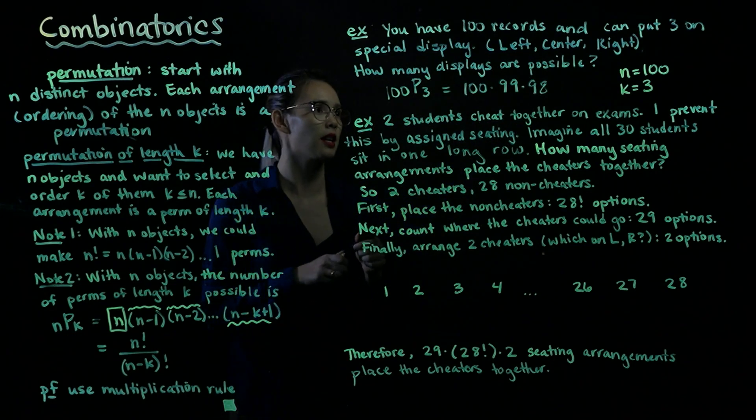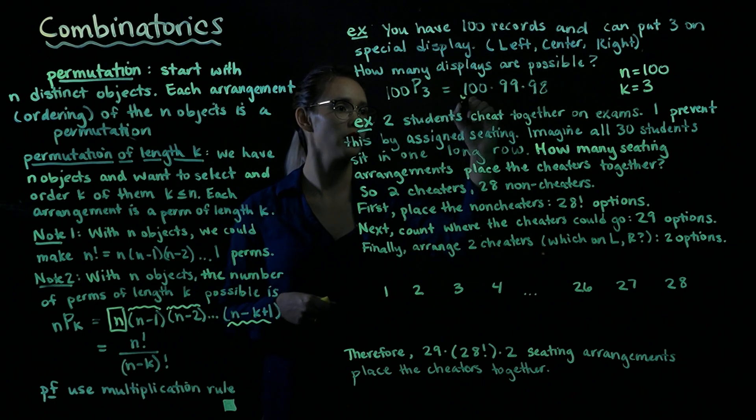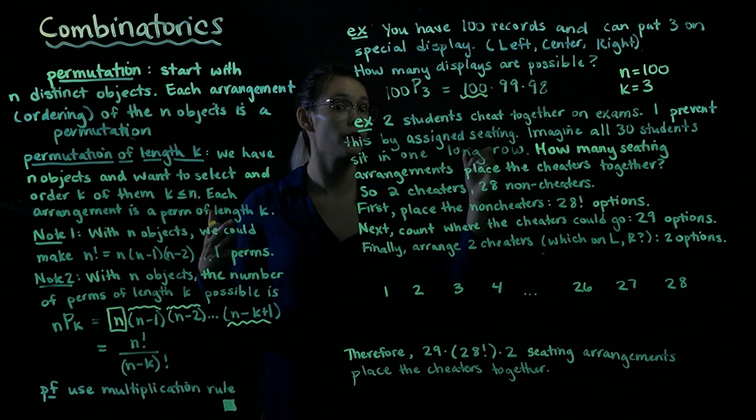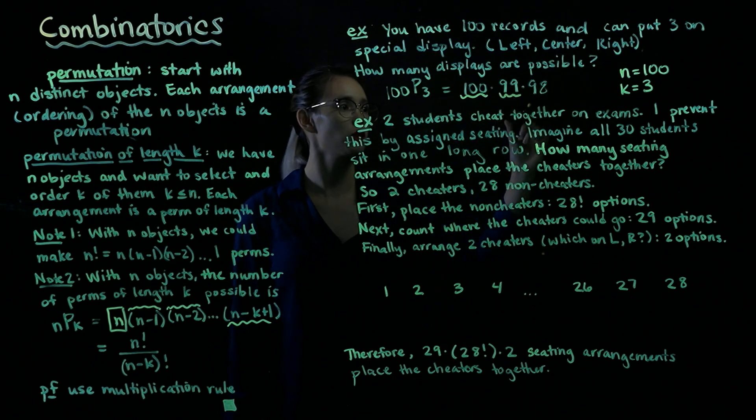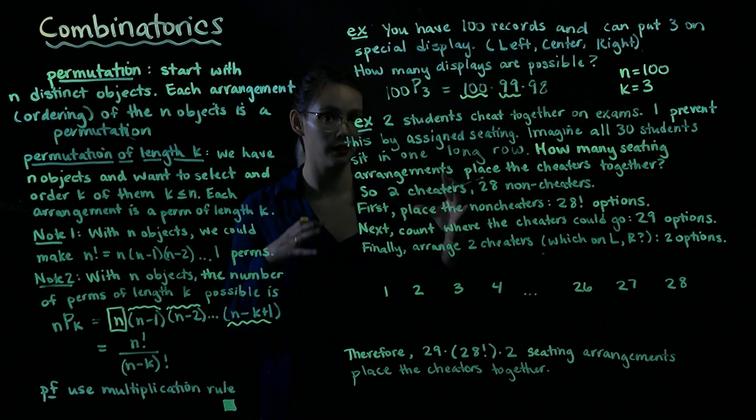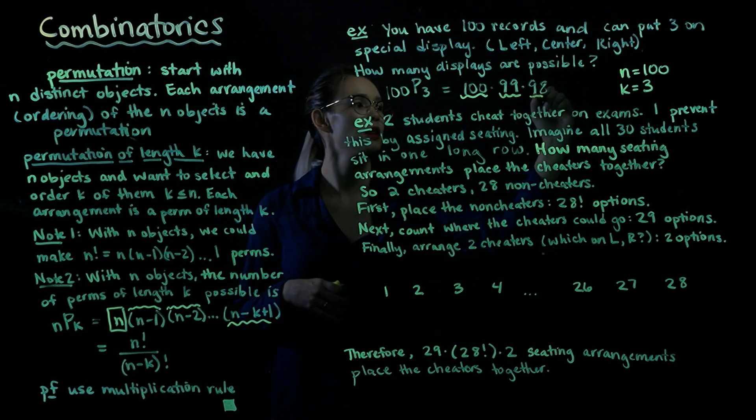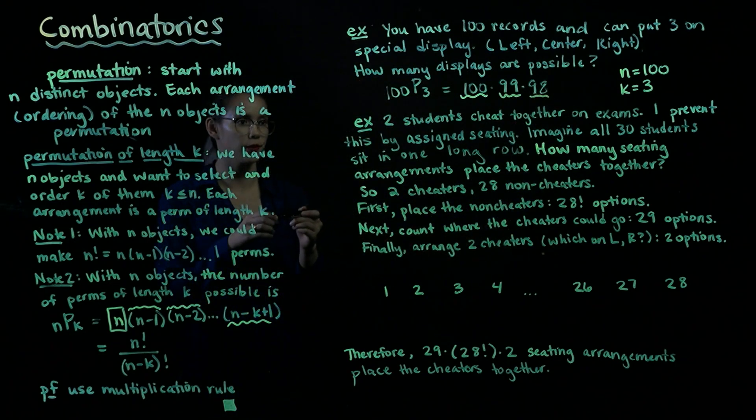And again, we can think about it as, if we start at the left, we have 100 options, 100 different records we could choose. In the center spot, we have 99 records because we've already placed one. And then once we get to the rightmost spot, we've already put two down, so that leaves 98 records to choose from. So that's how we get 98 for the last one.